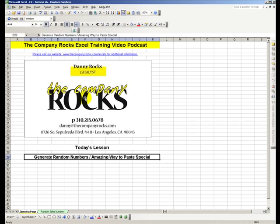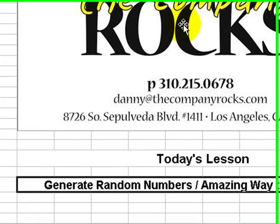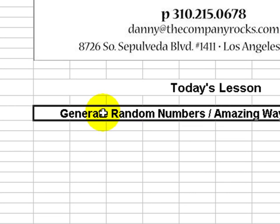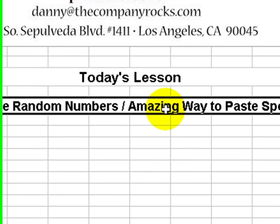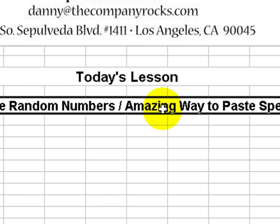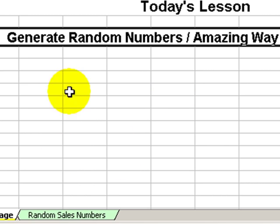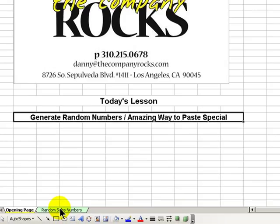Hello, welcome back to Tips and Time Savers. My name is Danny Rocks. In today's lesson I'm going to show you how to use the RANDBETWEEN function to generate random numbers in your spreadsheet, and then I'm going to demonstrate an absolutely incredible way that with one mouse movement you can substitute edit copy, edit paste special when we need to convert the randomly generated formulas into values.